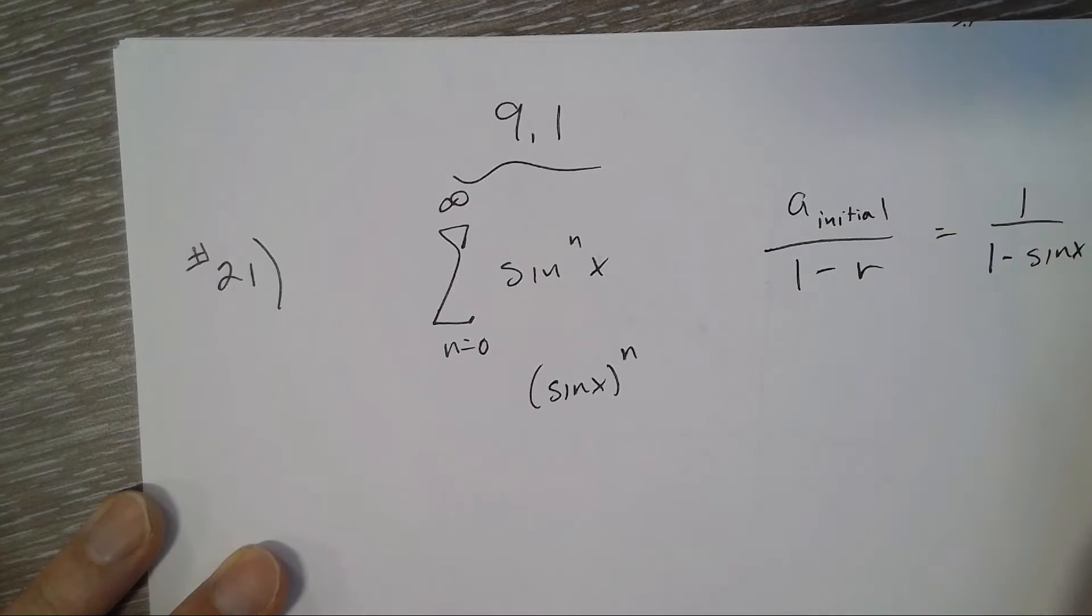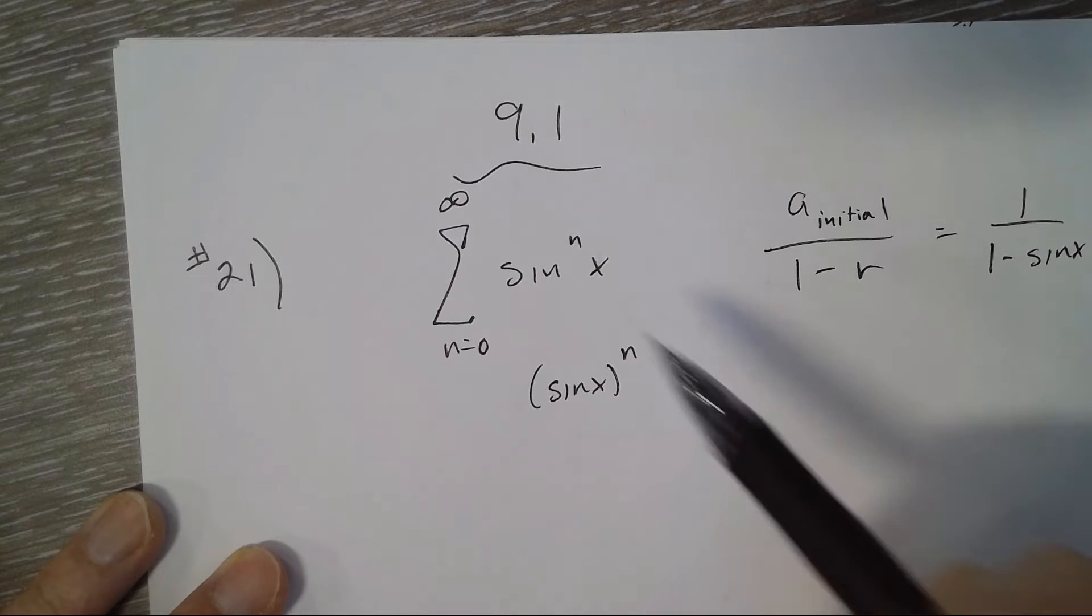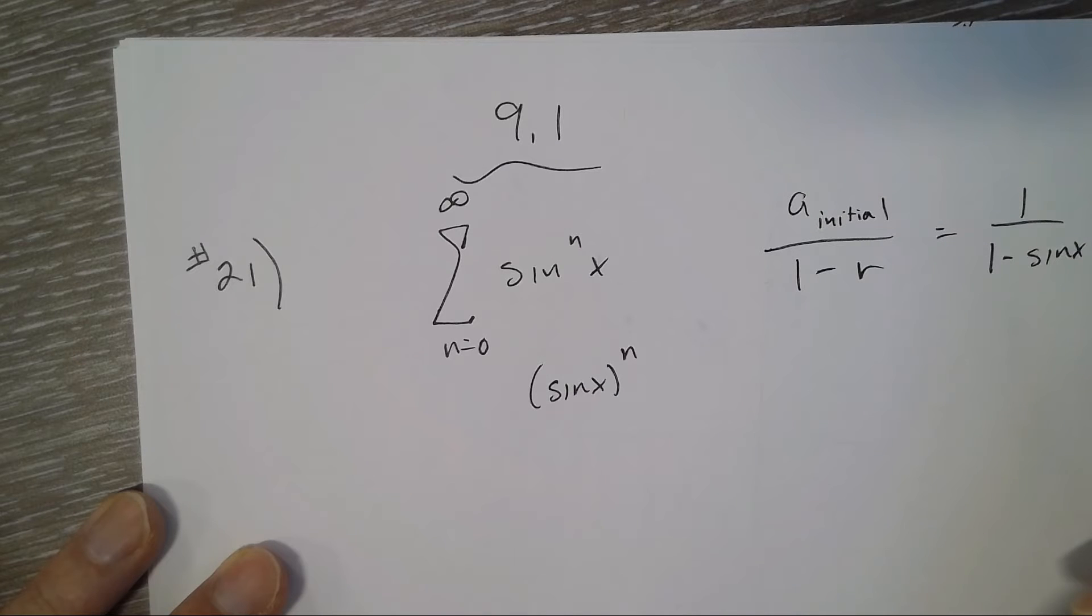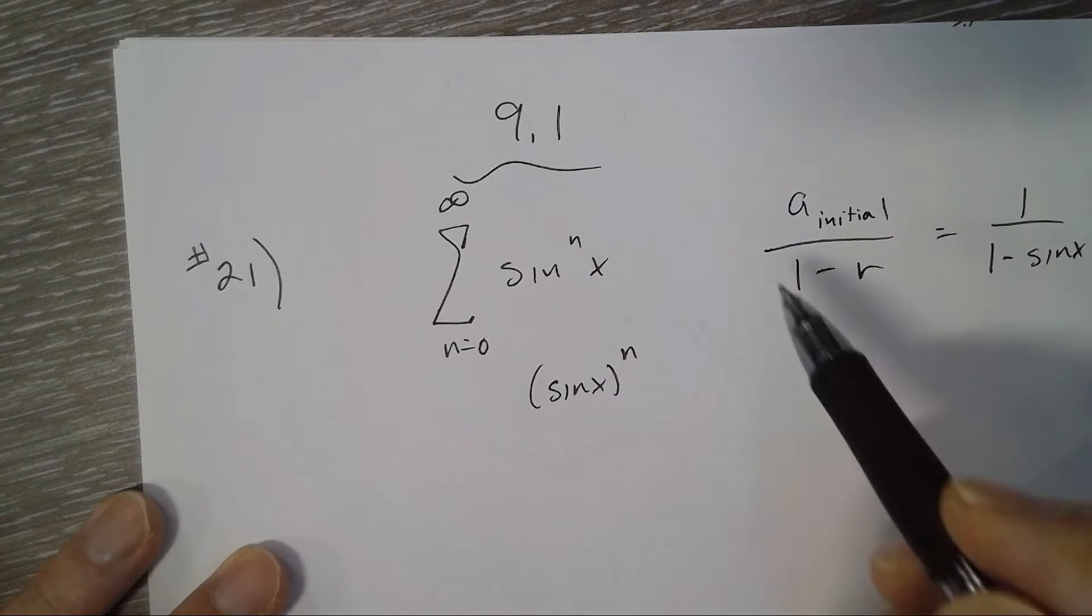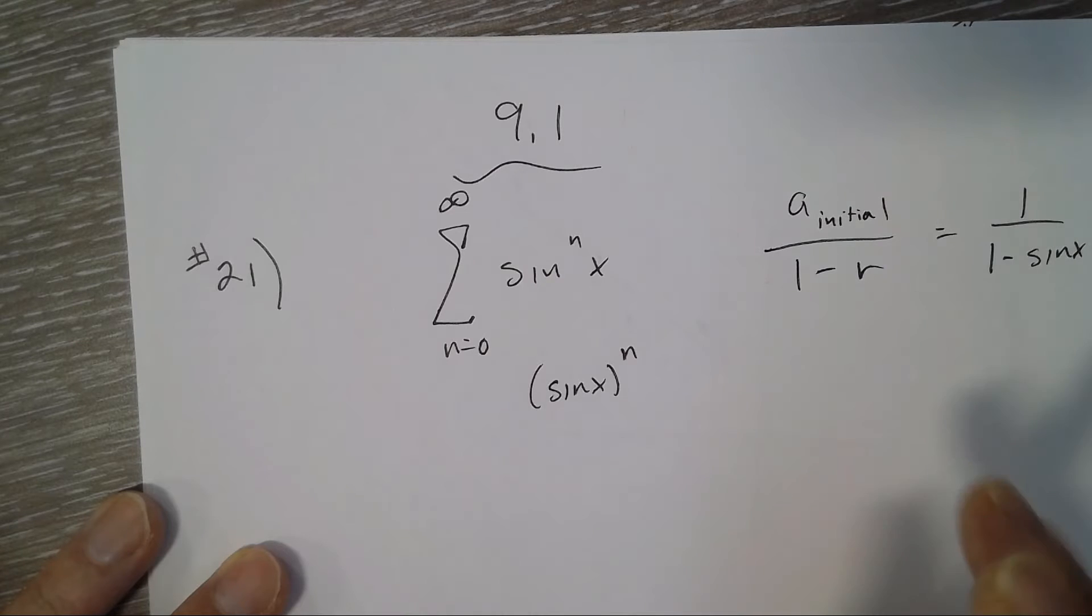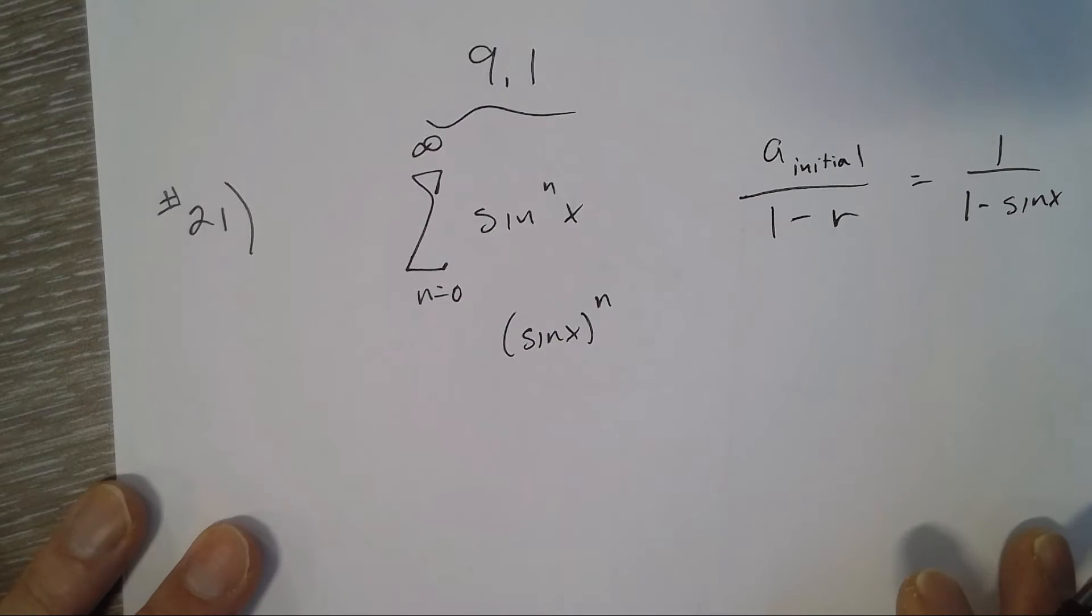That's what it'll be if you add them all up. It's just the sum of a geometric infinite series, and that's only true if the r is between negative 1 and 1, not including negative 1 and 1.